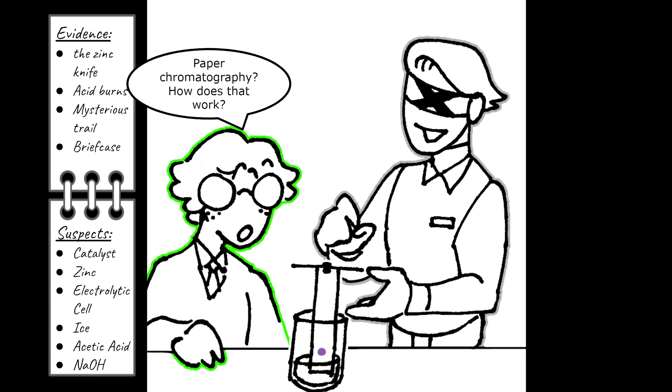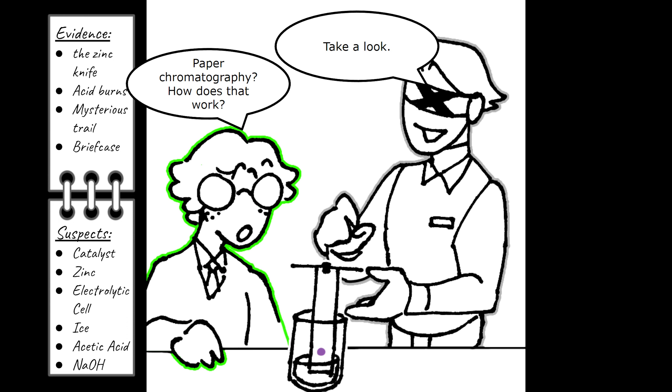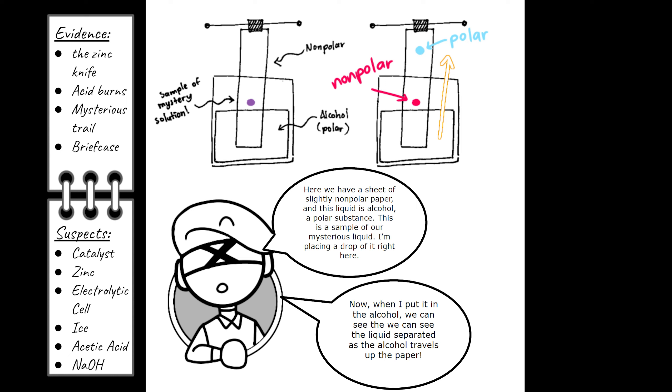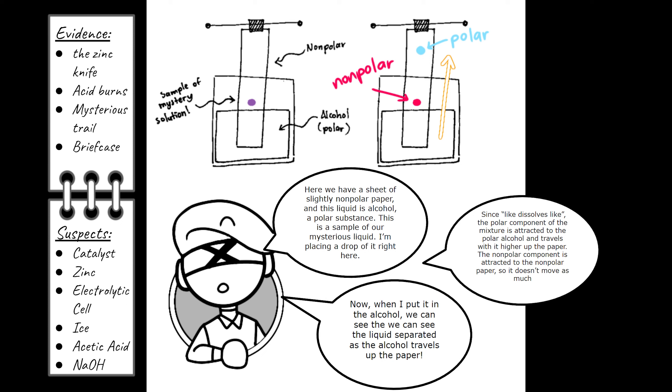Using paper chromatography, I discovered this strange liquid was actually a mixture of a non-polar and a polar substance. Paper chromatography? How does that work? Take a look. Here we have a sheet of slightly non-polar paper, and this liquid is alcohol, a polar substance. This is a sample of the mysterious liquid. I'm placing a drop of it right here. Now, when I put it in the alcohol, we can see the liquid separates as the alcohol travels up the paper. However, since like dissolves like, the polar component of the mixture is attracted to the polar alcohol and travels with it higher up the paper. The non-polar component is attracted to the non-polar paper, so it doesn't move as much.